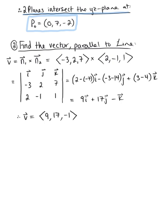The reason I say this is one possible parallel vector is because any scalar multiple of this vector will work. We specifically defined our parallel vector as the cross product of n sub 1 and n sub 2, but we could also switch the order of those or use any scalar multiple of what we just found. So there are lots of different correct answers here.